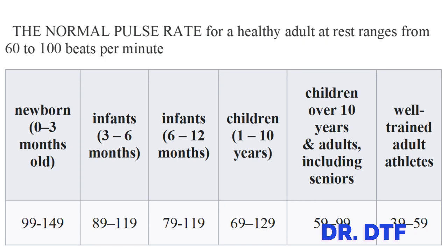For most healthy adults the pulse rate ranges from 60 to 100. A newborn will have a pulse rate ranging from 99 to 149 beats per minute. Infants from 3 months to 12 months will have a pulse rate ranging from 79 to 119. A young child will have a pulse rate ranging from 69 to 129. An adult, as I said, will range from about 60 to 100.